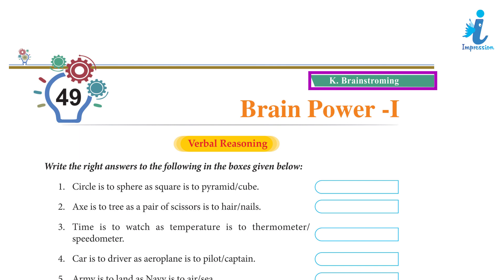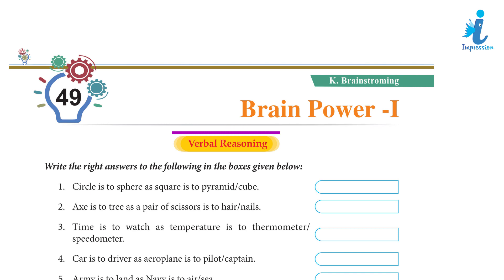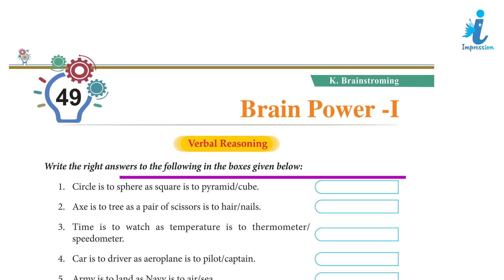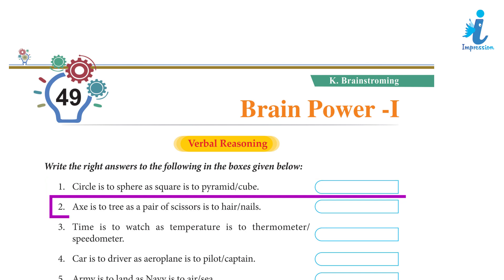Brainstorming, Chapter 49: Brain Power — Verbal Reasoning. Write the right answer in the boxes given below. 1. Circle is to sphere as square is to cube. 2. Axe is to tree as a pair of scissors is to nails.